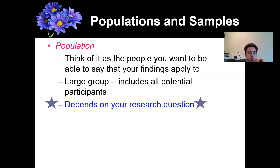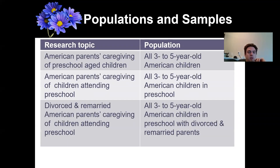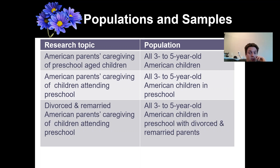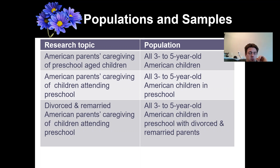This is going to depend on your research question. So if my research topic is American parents' caregiving of preschool-age children, then the population is going to be all three-to-five-year-old American children in preschool age. And if my research topic is divorced and remarried American parents, the population shifts accordingly.